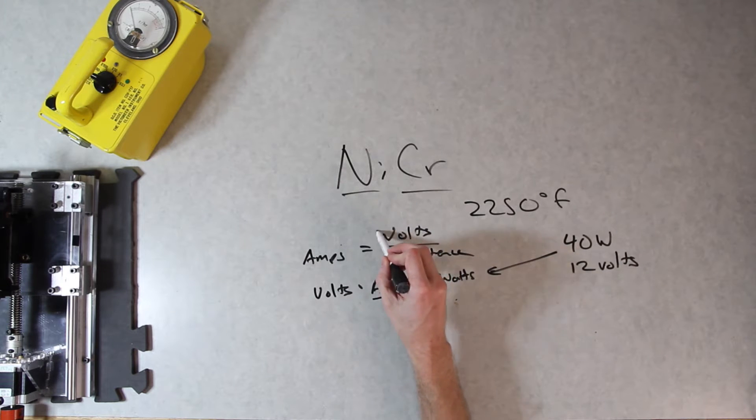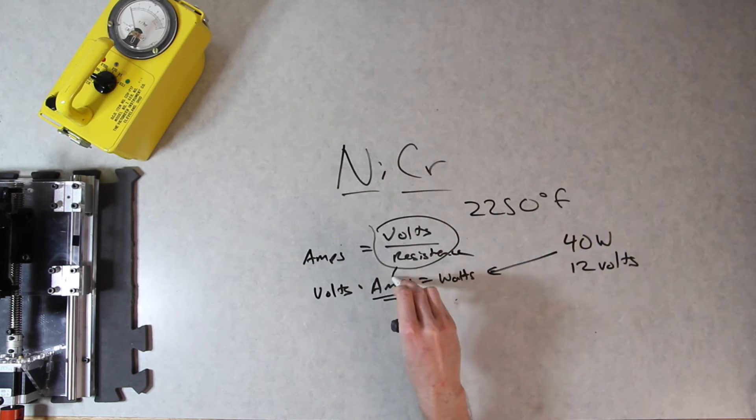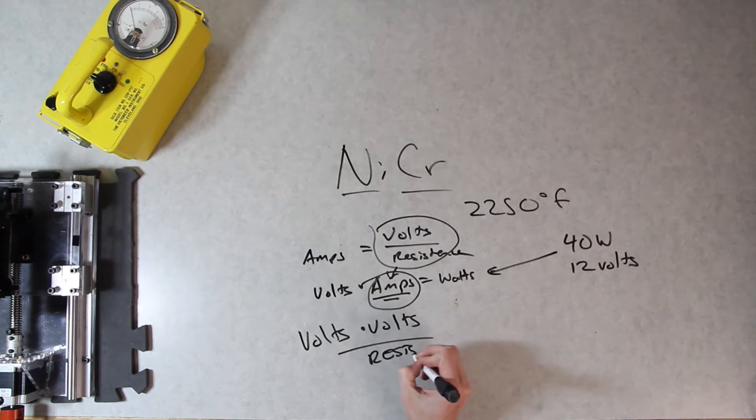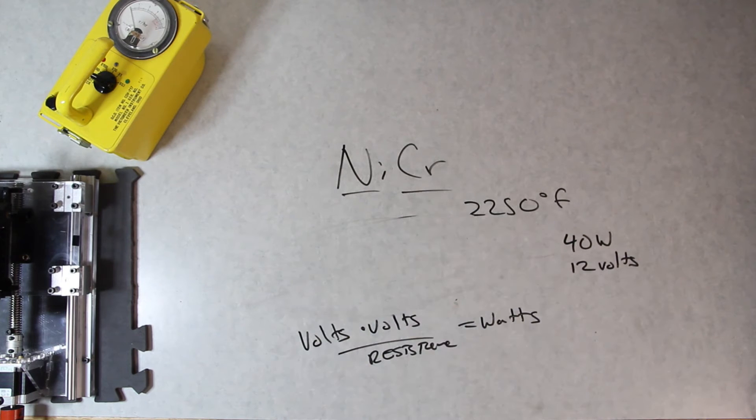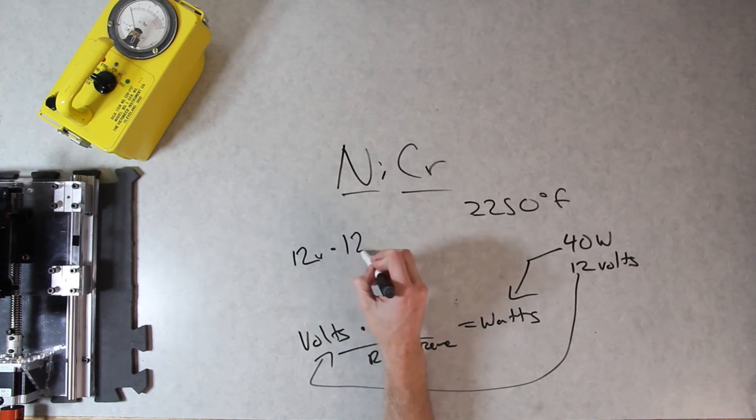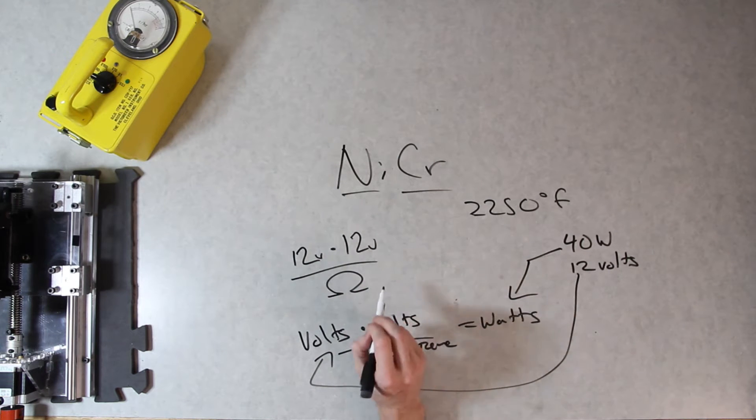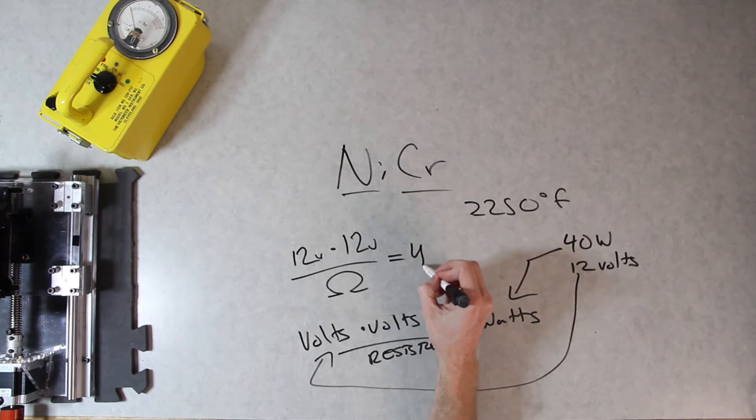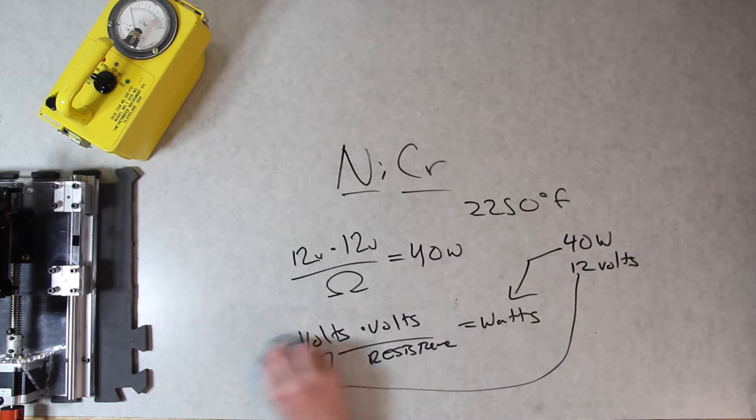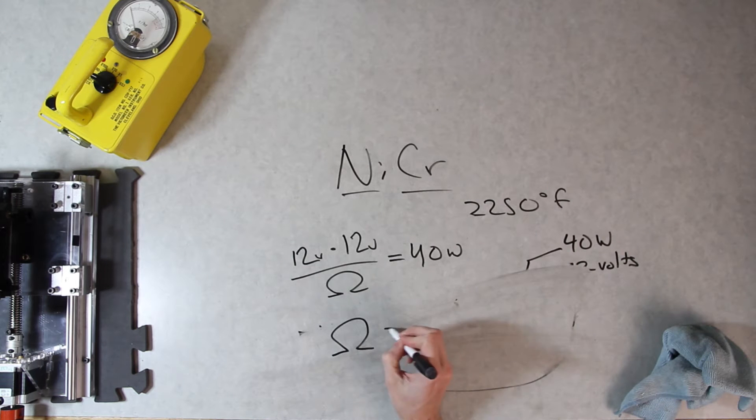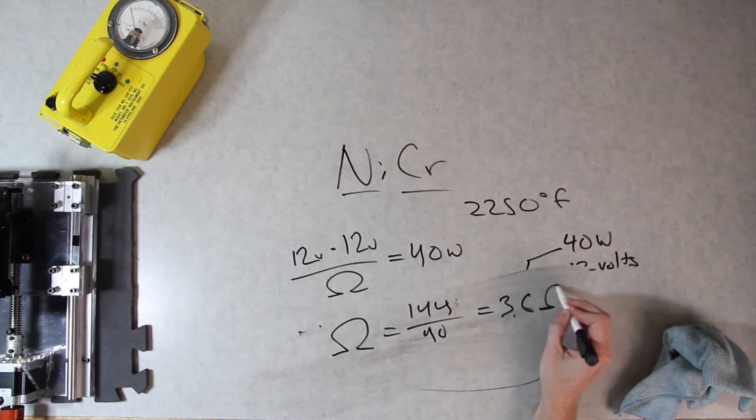So what we're gonna do is take this and put it into this. We've got our equation, all you got to do is plug these things in, right? 12 volts times 12 volts over resistance, which is this little omega symbol, is equal to 40 watts. Ohms is equal to 144 over 40, which is 3.6 ohms.